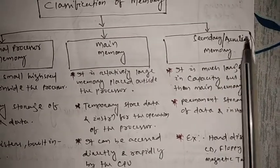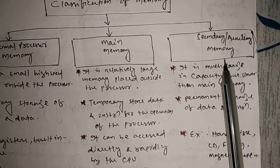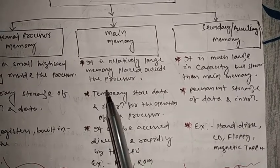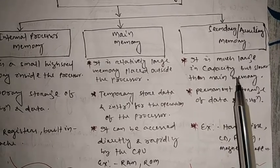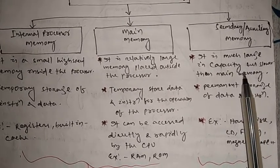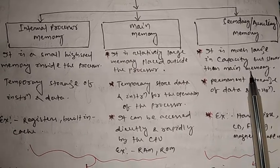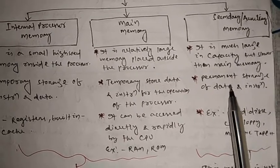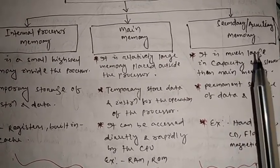Next, secondary or auxiliary memory. It is much larger in capacity but slower than main memory. Secondary or auxiliary memory size is much larger than main memory, but its speed of execution is slower than main memory. Whatever data and information you store in a computer, all are stored in secondary or auxiliary memory. Whenever we want to execute any information stored in secondary or auxiliary memory, that will be executed with the help of main memory. It is called permanent storage of data and instructions.